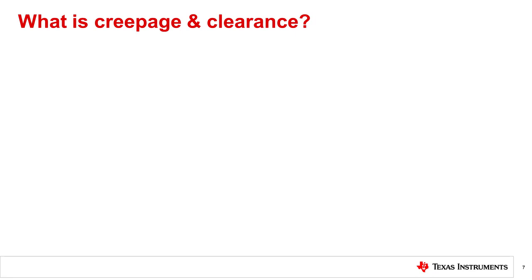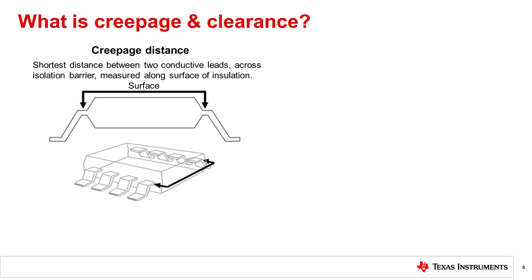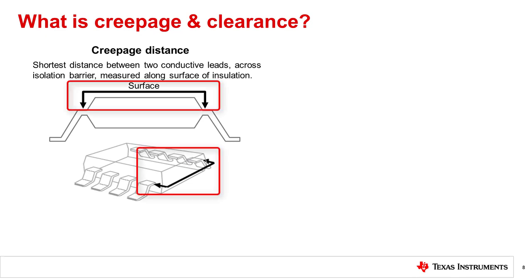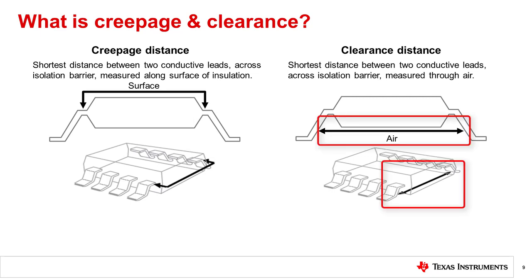What is creepage and clearance and how are they different? Creepage and clearance requirements are industry standard specified spacing requirements between metallic or conductive contacts that are external to the isolation device. Creepage is defined as the shortest distance between two conductive paths measured along the surface of a solid insulation — the shortest path is typically found around the end of the package body, between conductive pins or leads. Clearance is the shortest distance between two conductive parts measured through air, typically measured on a device package between pins under the body of the package.